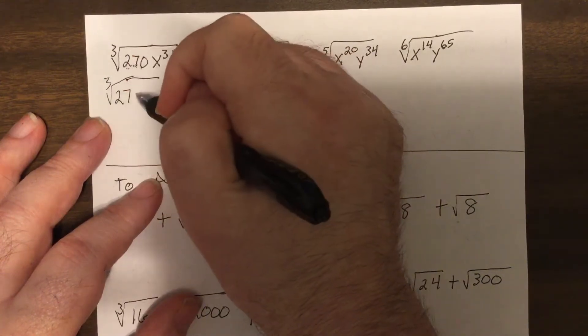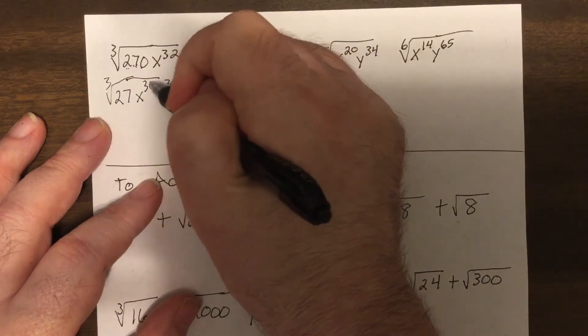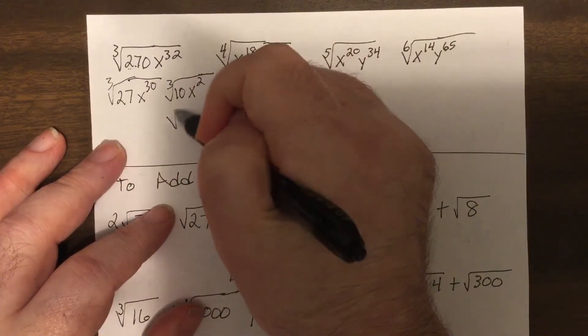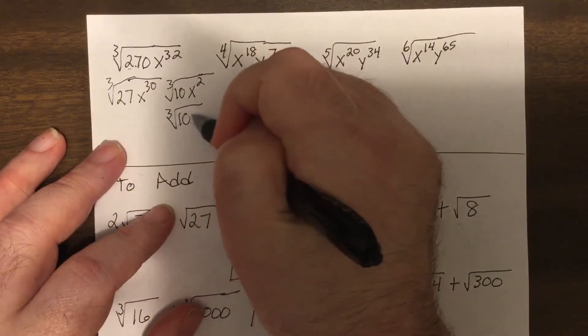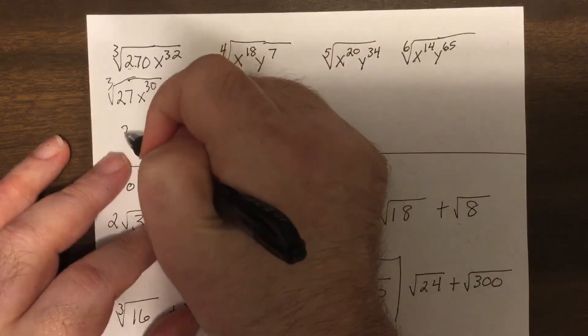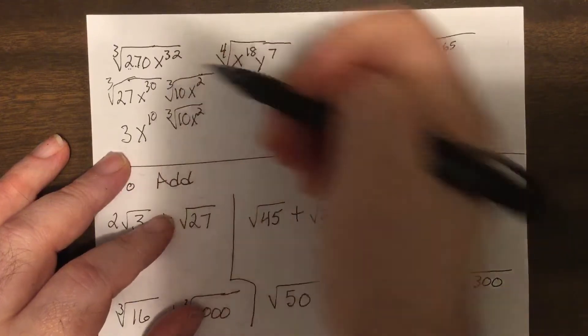I need a power divisible by three. So it'd be x to the 30th x squared. Now this is leftover stuff. I can't do anything with it. But this, the cube root of 27 is three. Cube root of x to the 30th is x to the 10th.